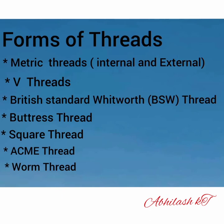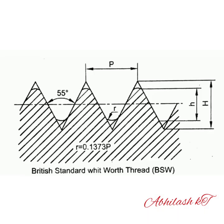Forms of threads include: metric threads, V threads, British Standard Whitworth threads, buttress threads, square threads, Acme threads, and worm threads. British Standard Whitworth thread is in V form and the thread angle is 55 degrees. The crest and root are rounded off to reduce stress concentration. It is used for general engineering purposes.